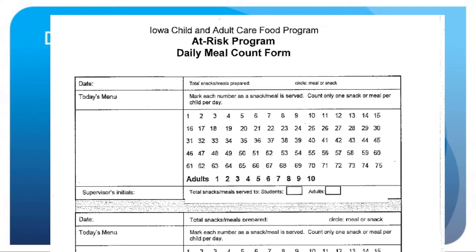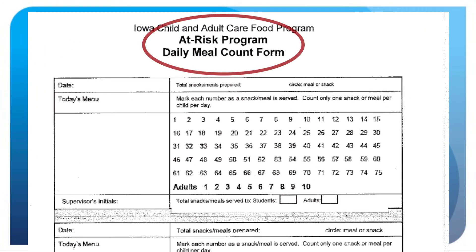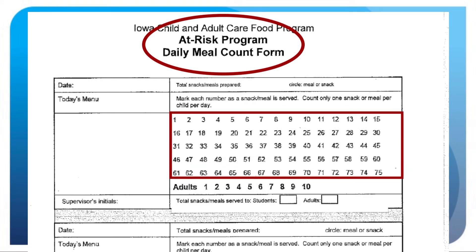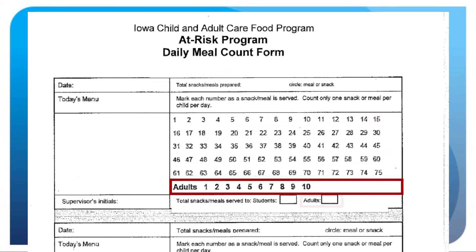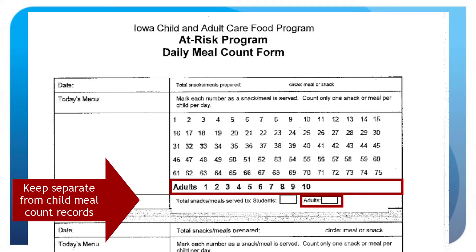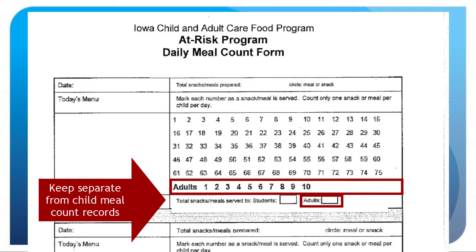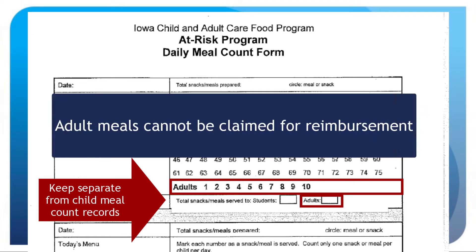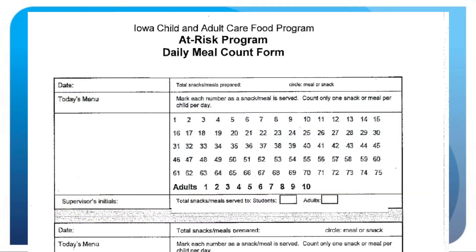Use a separate form to record daily meal counts to document the number of children who received a meal or snack. Record the number of meals by type served to adults performing food service labor, and keep these records separate from child meal count records. Adult meals cannot be claimed for reimbursement.